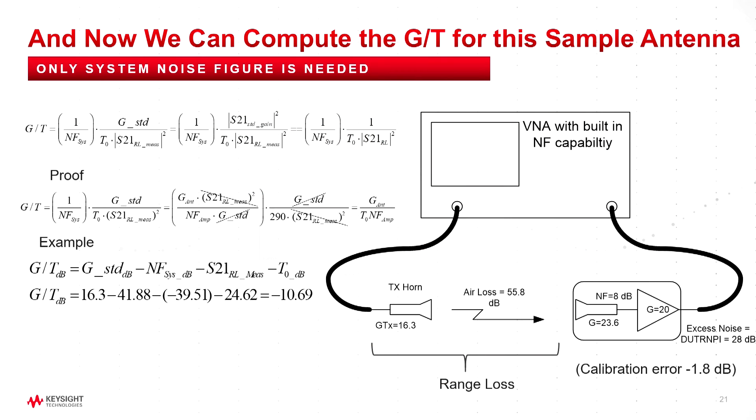So here I connect up the antenna, and I make the measurements, and this is at one frequency. I measure the gain of the standard gain horn that I used for this was 16 dB. The noise figure of the system is 41 dB. The measured range loss was minus 40, 39 a little, and finally that gives us a G/T measurement of minus 10.